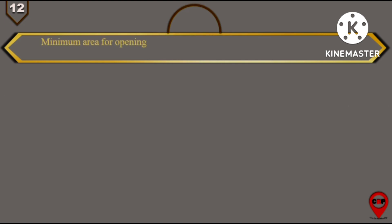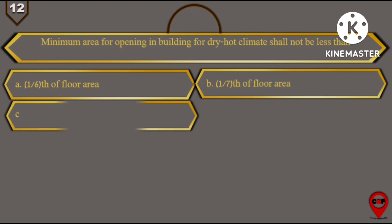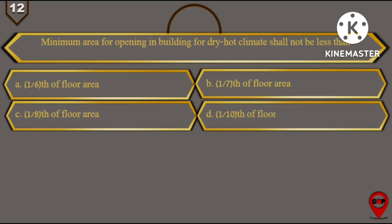Question number 12: Minimum area for opening in building for dry hot climate shall not be less than. And the options are: A. One sixth of the floor area, B. One seventh of the floor area, C. One eighth of the floor area, and option D is one tenth of the floor area.